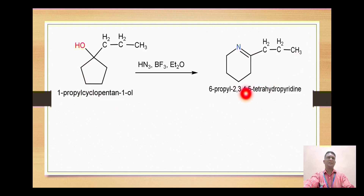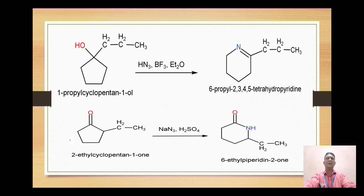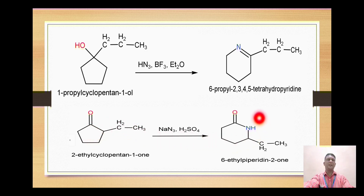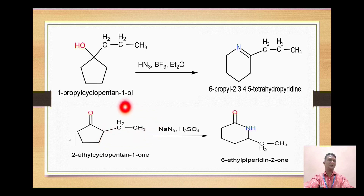The propyl-substituted cyclopentenol compound is converted to a propyl-substituted tetrahydropyridine ring. The next example is 2-ethylcyclopentenone, which is a ketone. Since it is a ketone, it is converted to the corresponding amide: the NH group is inserted between the carbonyl carbon and the carbon attached to the alkyl group, giving a piperidin-2-one derivative.